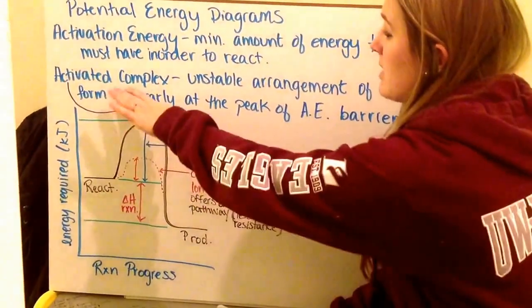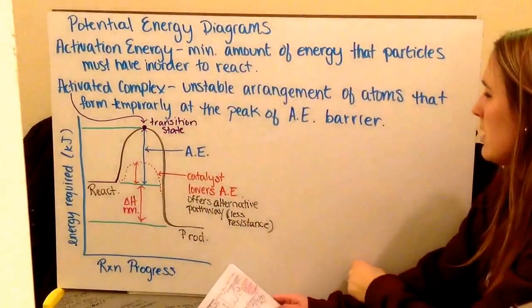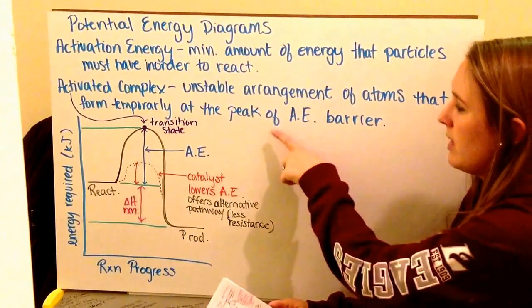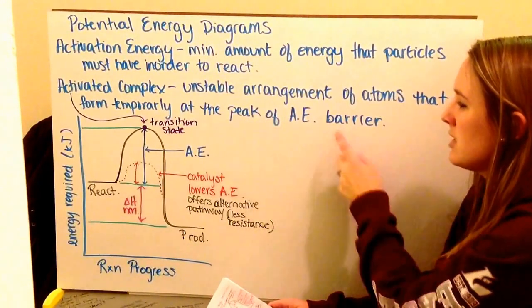Then we have your activated complex. This is the unstable arrangement of atoms that form temporarily at the peak of AE, which is your activation energy barrier.